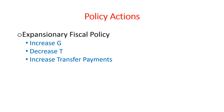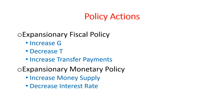Expansionary Fiscal Policy means either the government increases its expenditures, decreases the tax rate, or increases transfer payments to the public. Similarly, Expansionary Monetary Policy includes an increase in money supply or a decrease in the interest rate or policy rate. Any of these actions will cause the economy's output level to increase by raising aggregate demand, and therefore the economy's equilibrium will move towards the full employment level of output.